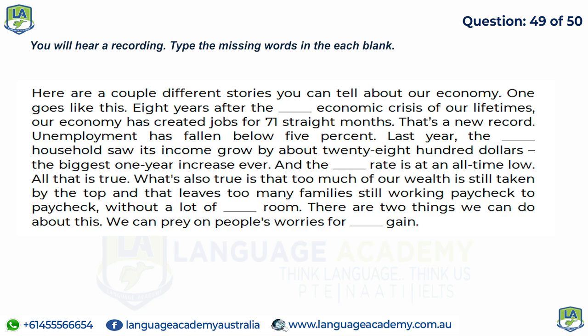Here are a couple of different stories you can tell about our economy. One goes like this: eight years after the worst economic crisis of our lifetimes, our economy has created jobs for 71 straight months — a new record. Unemployment has fallen below five percent. Last year, the typical household saw its income grow by about $2,800 — the biggest one-year increase ever — and the uninsured rate is at an all-time low. What's also true is that too much of our wealth is still taken by the top, leaving too many families working paycheck to paycheck without breathing room. There are two things we can do: we can prey on people's worries for political gain, or we can work to address the real issues.